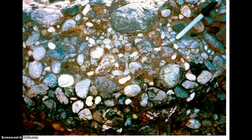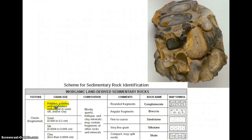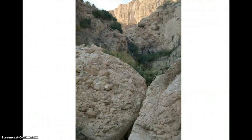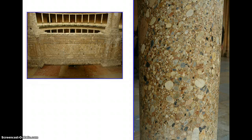Let's go through the five clastic rocks listed on your reference table. The thing that makes them different from each other — the way we classify them — is by their grain size. If a rock has large grains, such as pebbles, cobbles, or boulders, and the particles are rounded, we would call the rock a conglomerate. Here is a piece of conglomerate — you can see these large rounded particles in the rock, and large clasts inside the bigger boulder.